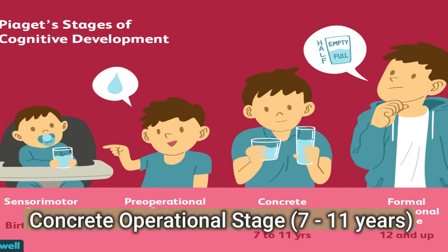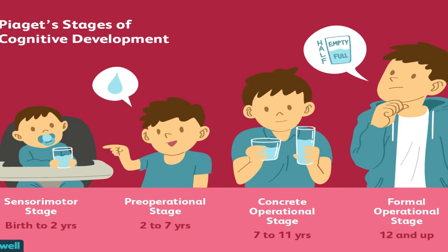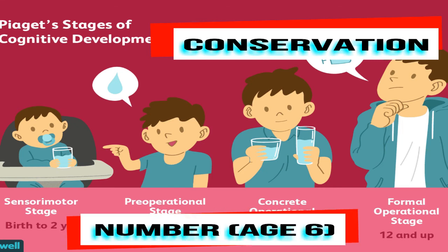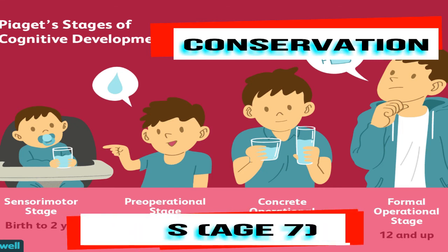Concrete Operational Stage (7 to 11 Years): Piaget considered the concrete stage a major turning point in the child's cognitive development because it marks the beginning of logical or operational thought. This means the child can work things out internally in their head rather than physically try things out in the real world. Children can conserve number at age 6, mass at age 7, and weight at age 9.